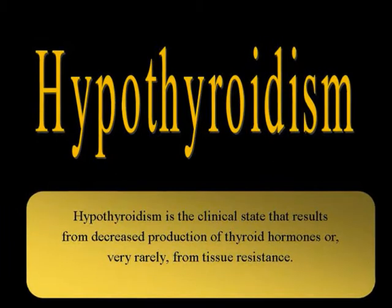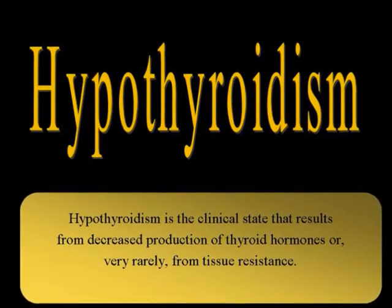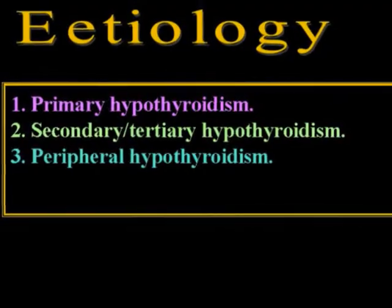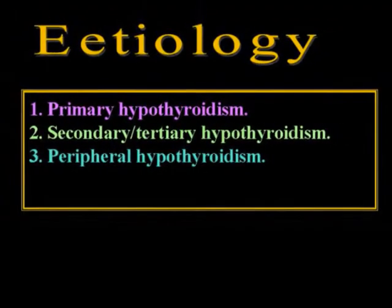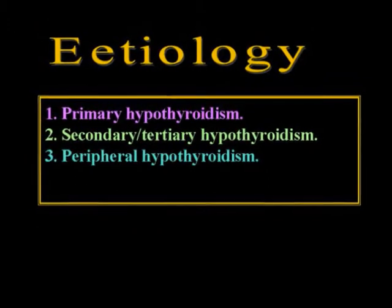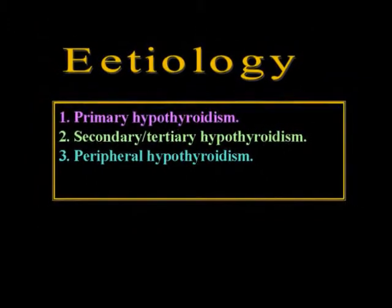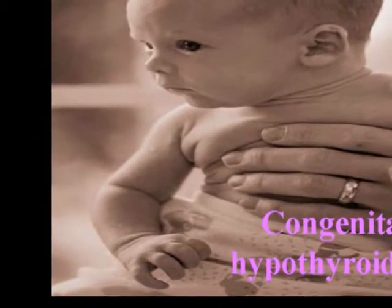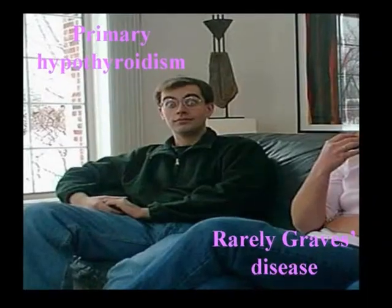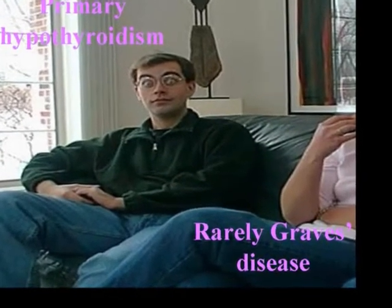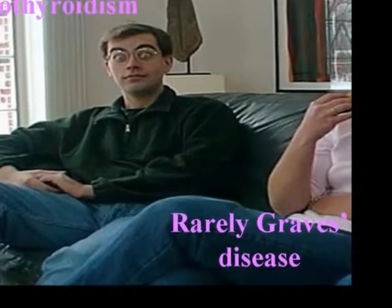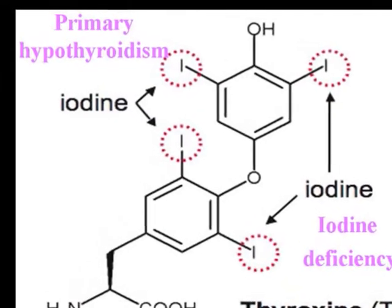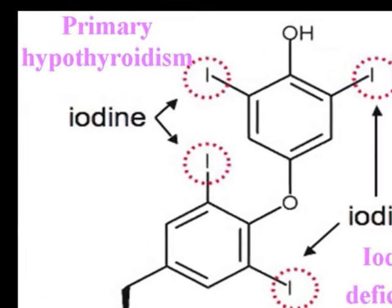Hypothyroidism is the clinical state that results from decreased production of thyroid hormones, or very rarely from tissue resistance. Primary hypothyroidism accounts for more than 95% of adult cases, and is due to failure of the thyroid gland itself as a result of autoimmune destruction, or the effects of treatment of thyrotoxicosis. Hypothyroidism may also be drug-induced by agents such as amiodarone and lithium, which causes hypothyroidism in around 10% of patients treated.